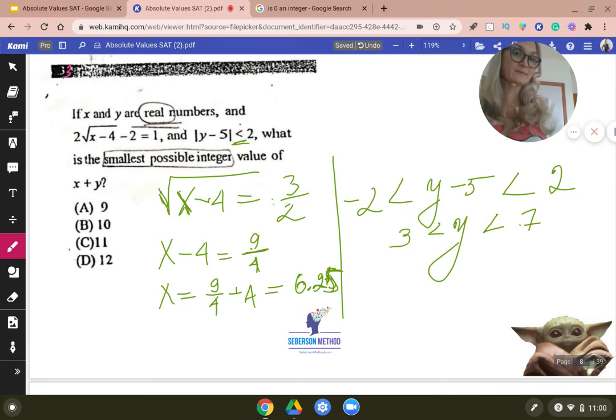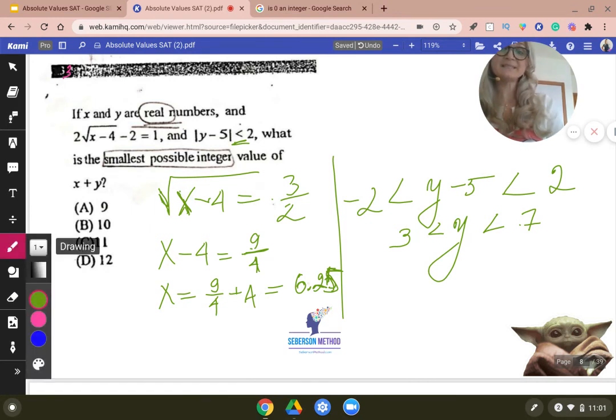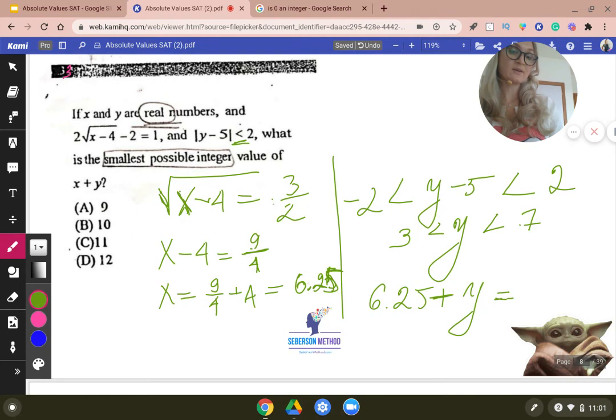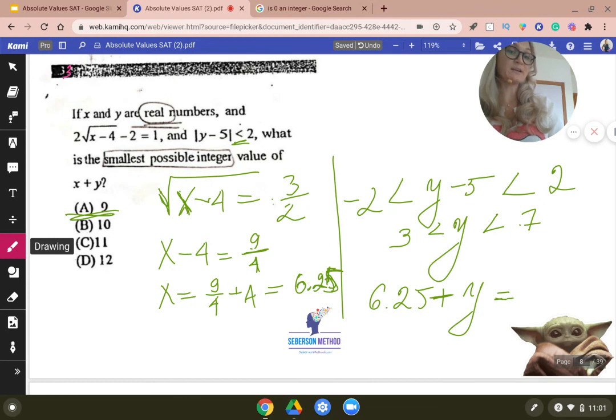So three is the smallest. And then it could be three point zero one, three point zero two. So three doesn't get included, but anything that's a little bit greater than three will be included. So six point two five plus some kind of y equals an integer. So if we know that y has to be greater than three, that means nine is not going to be one of our answer choices because we're adding something that's greater than three. But we could add three point seventy five, and three point seventy five is within the range, and the answer is going to be ten.